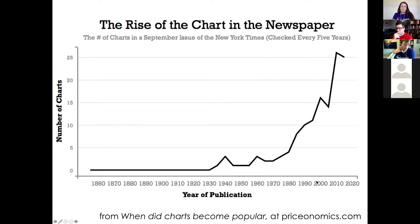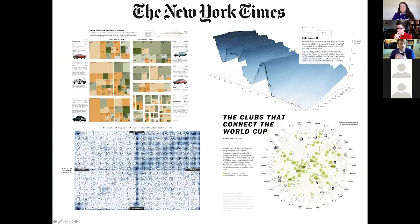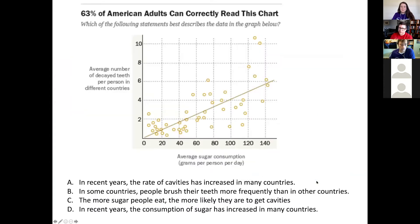There has been a rise of charts, especially in newspapers but also in social media. We even use data graphics for everything, even things we don't need. MSNBC tweeted out a chart — Trump tweets mentioning Mueller by name — and the values were 0, 0, 1, 2, 3. It's not a useful graphic. But charts and ways of communicating have gotten much more sophisticated, and with that come many ways in which charts can be misread and misinterpreted.